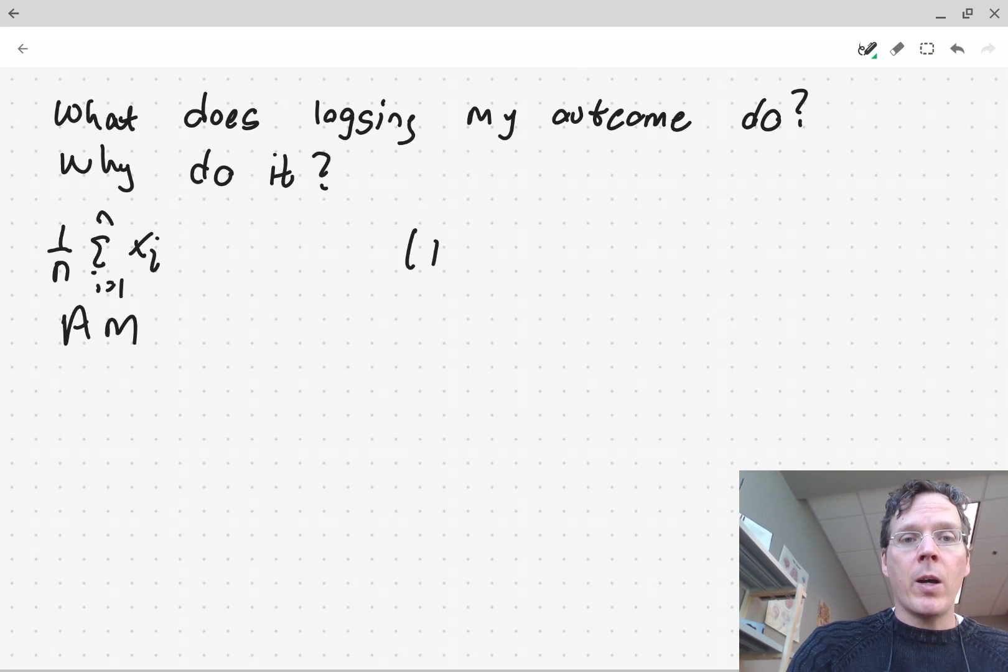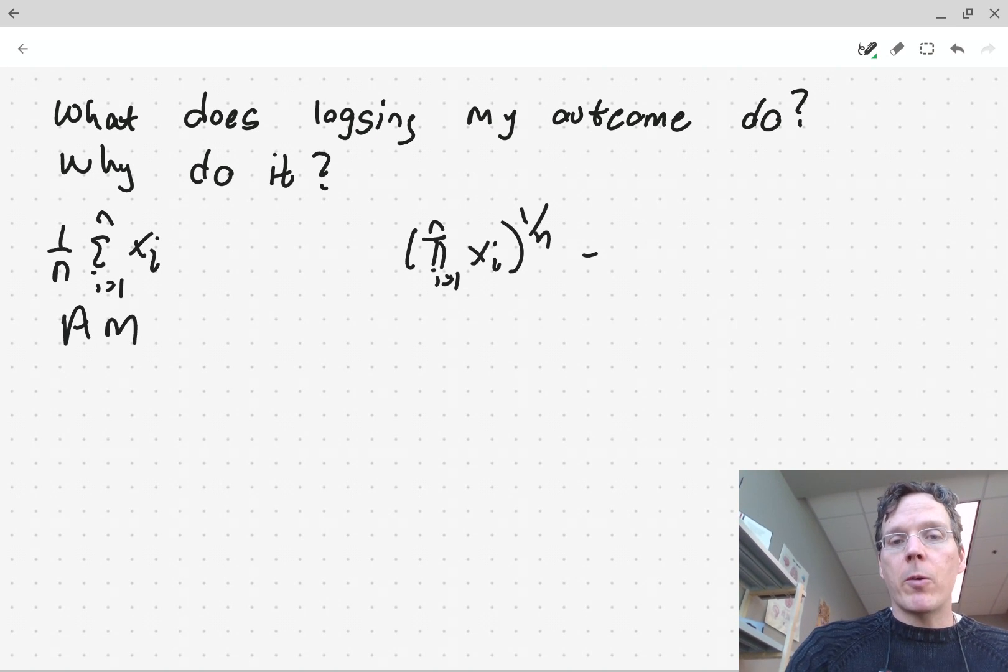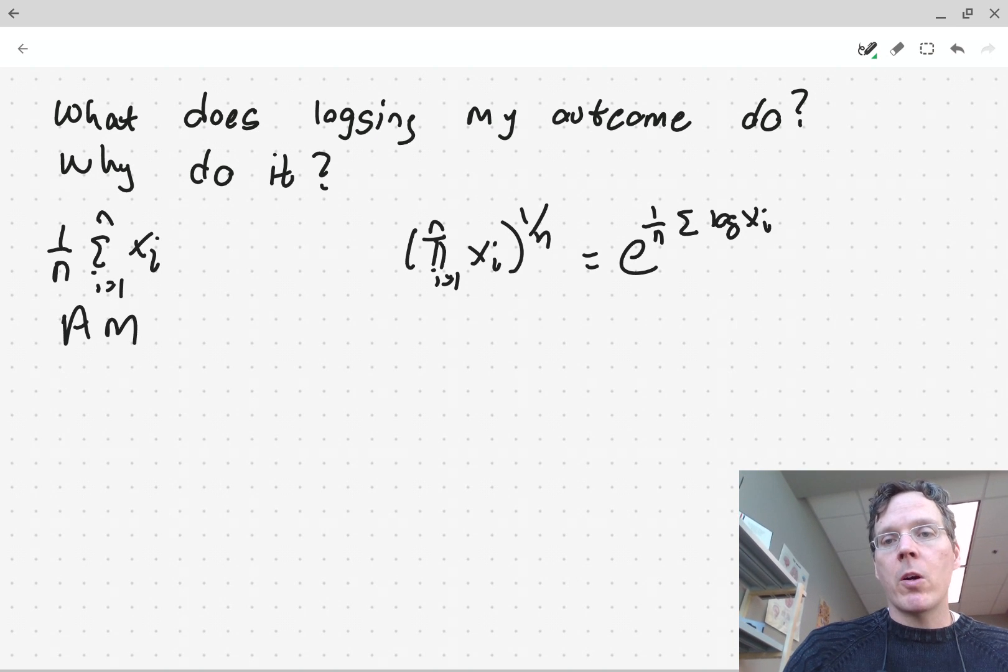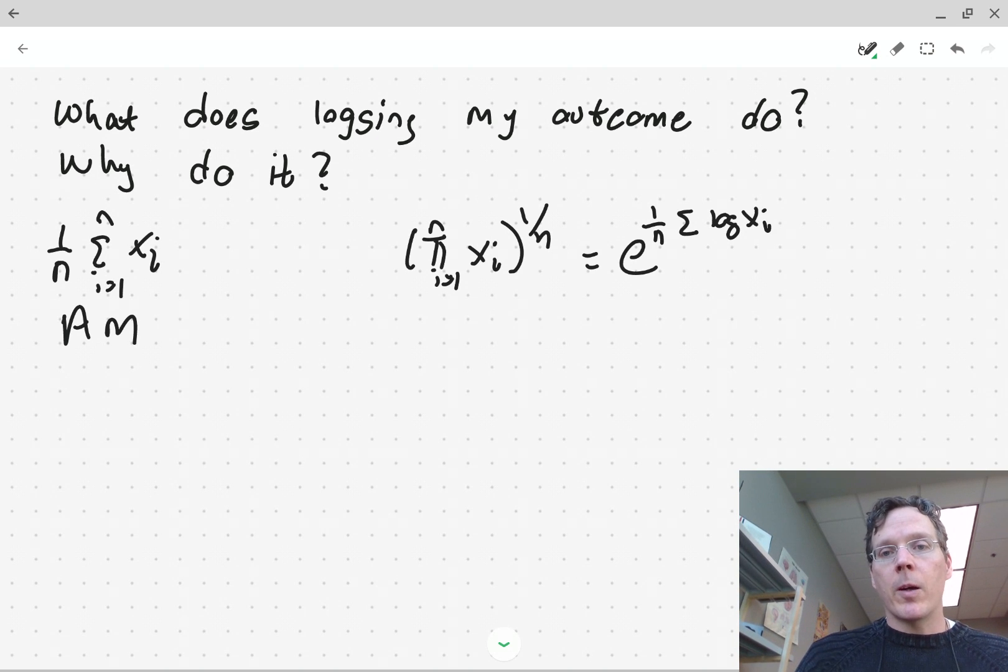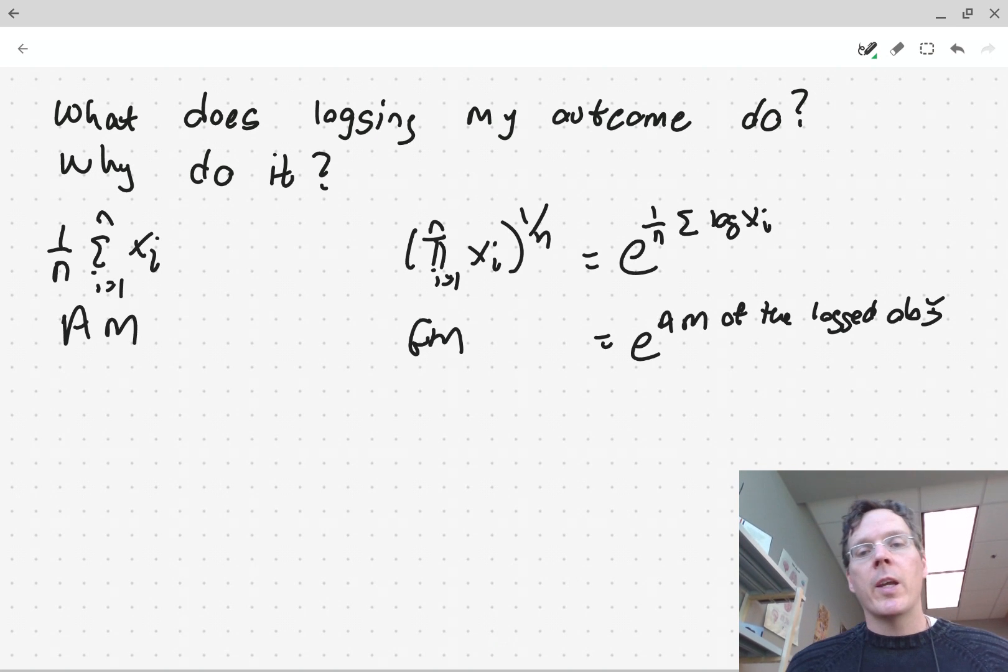The geometric mean, on the other hand, is the product of the observations raised to the 1 over nth power. So that's equal to e to the 1 over n summation log xi, where log here is natural log. So e to the arithmetic mean of the logged observations. So the geometric mean is the exponent of the arithmetic mean of the logged observations.